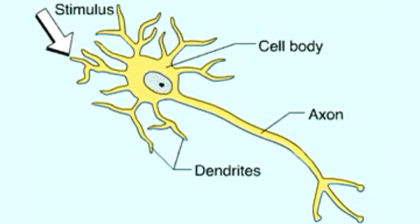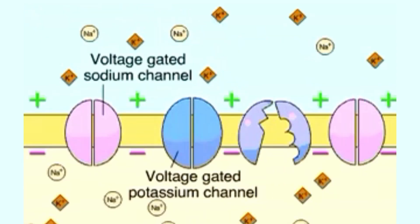How does the action potential move along the axon? Voltage gated channels in the membrane open and close depending on voltage changes across the membrane. When no nerve signals are being transmitted, these channels are closed.